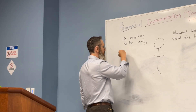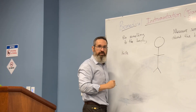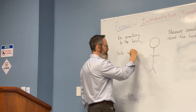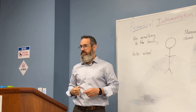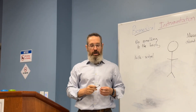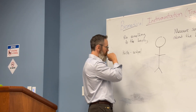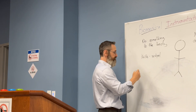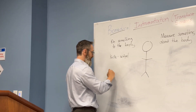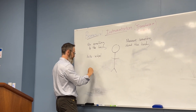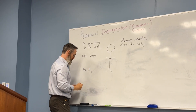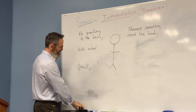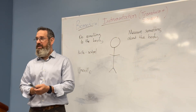A device that does something to the body might be what you'd call a knife — but if you're a surgeon, you'd use a scalpel. That's a medical device used for something specific: it makes a cut in the tissue.